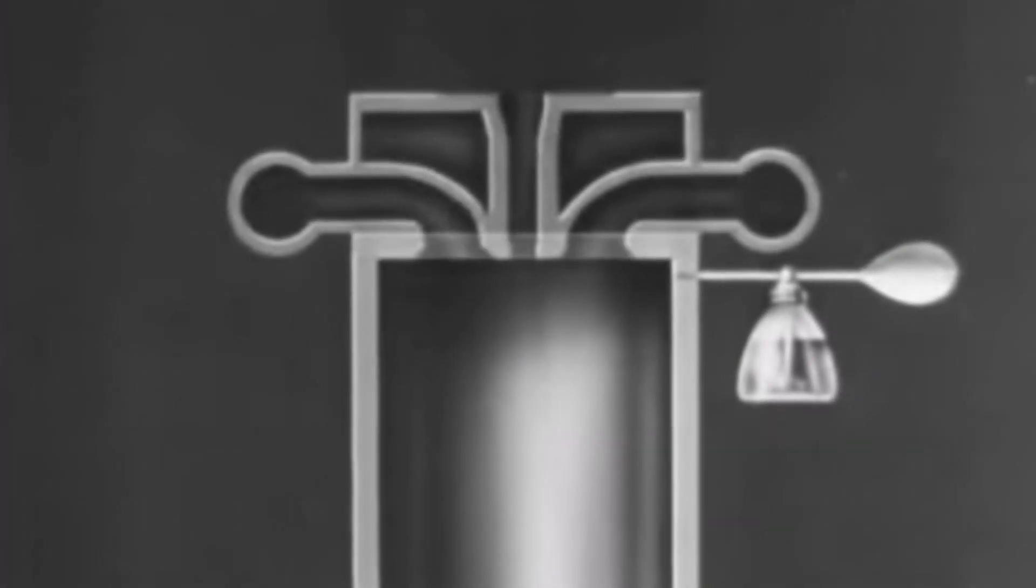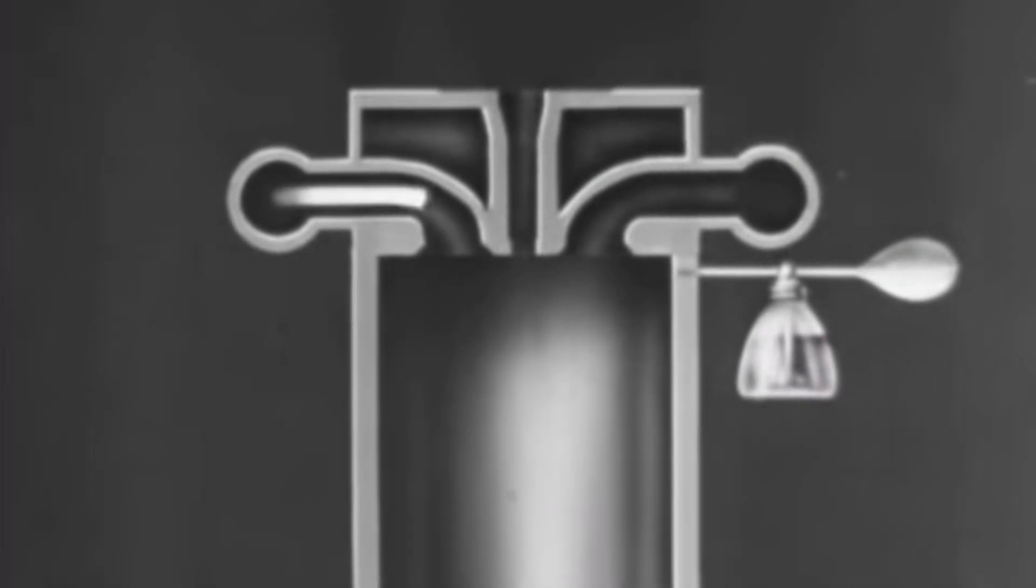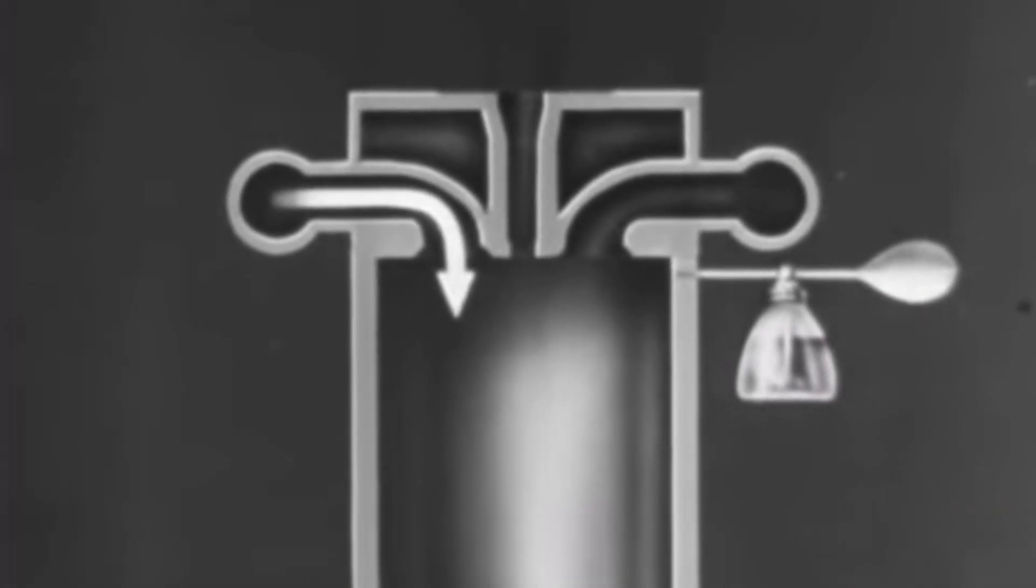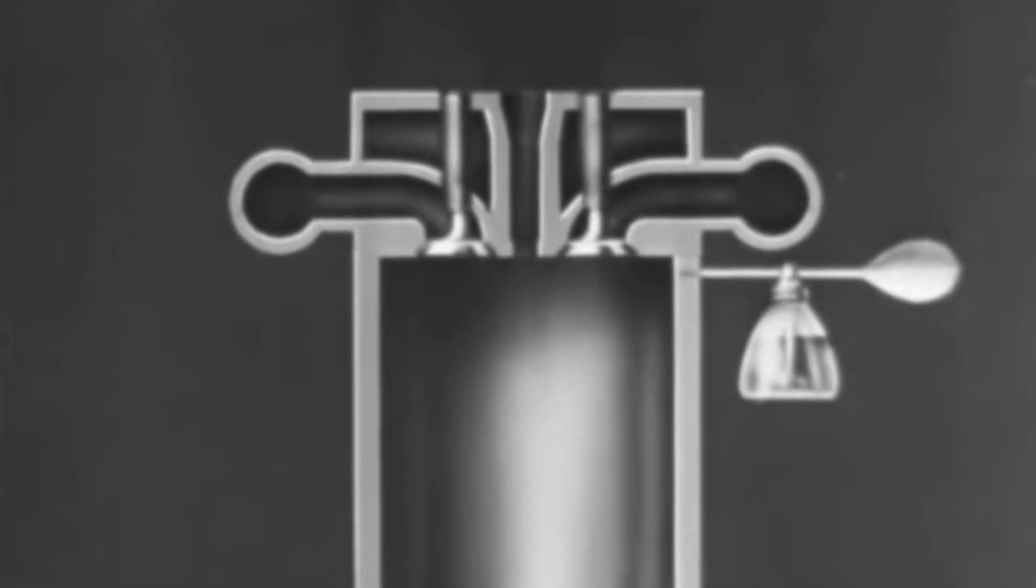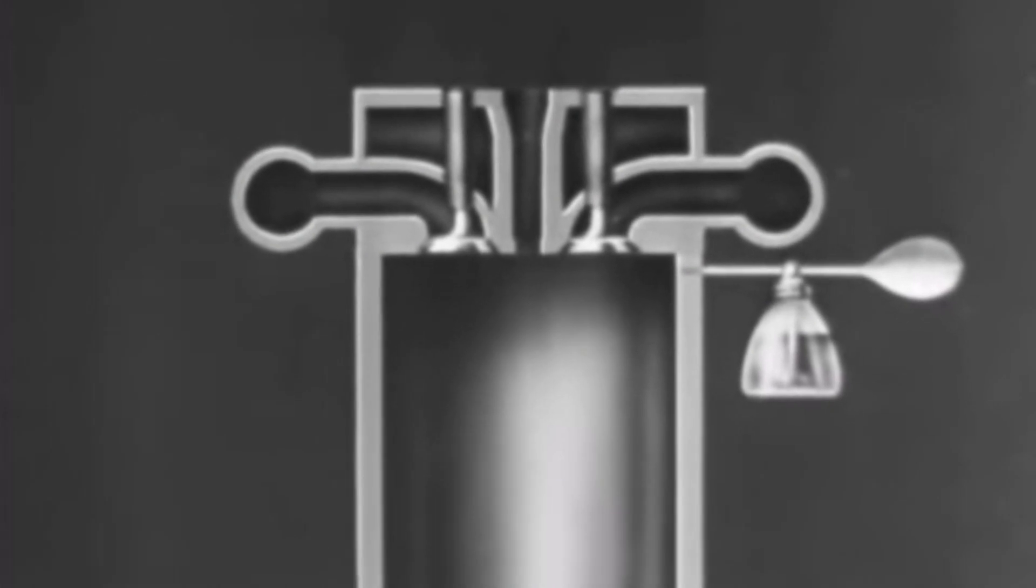We also need a couple of pipes or manifolds. One to bring fresh air into the cylinder, the other to carry the burned gases away, and two valves to seal the air in the cylinder while it is being compressed and while the oil is burning.